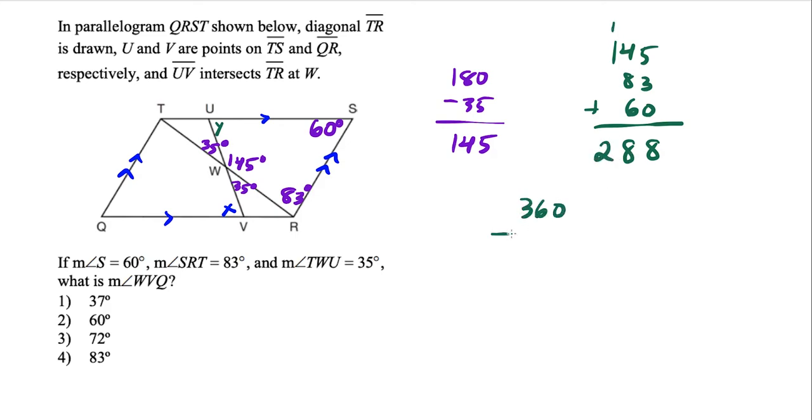So do 360 minus 288. That's going to tell us one of the missing angles. So we borrow here to make a 5. And when we complete the subtraction, this missing angle up here is going to be 72 degrees.